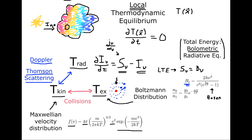The final coupling you can have is between the radiation temperature and the excitation temperature. We've already described this process — it's the process of photoabsorption, whereby an atom or molecule absorbs a photon and jumps up to the higher energy state. So there are different processes that can couple each of these temperatures. And in local thermodynamic equilibrium, all of these temperatures are coupled, so your radiation temperature matches your kinetic temperature, which matches your excitation temperature. This is one of the signs you're in local thermodynamic equilibrium.